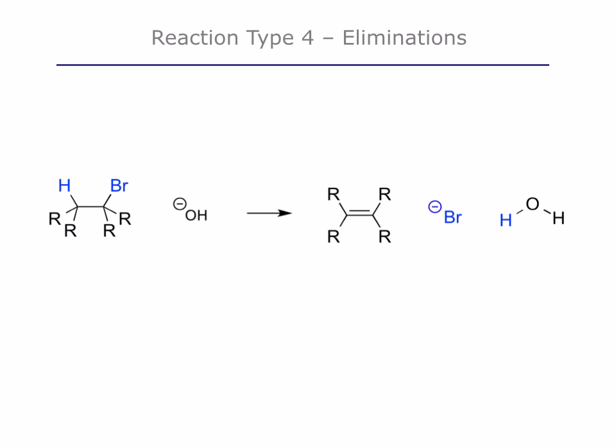The next reaction type is elimination, which is essentially the opposite of addition. We have some organic compound and we eliminate a small molecule from it. In this case, we're eliminating HBr from the molecule on the left to give the product on the right, which has a double bond. We're going from lots of single bonds to a compound with a double bond, using OH as a reagent to give the alkene and water. Think of these as the elimination of a small molecule like HBr from a bromoalkane to give something with a double bond.